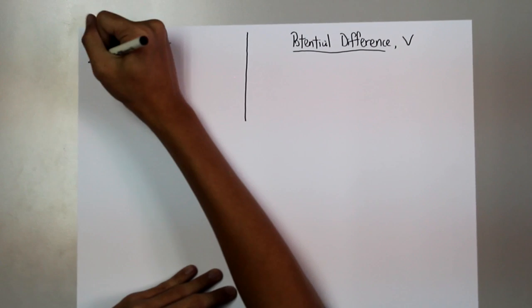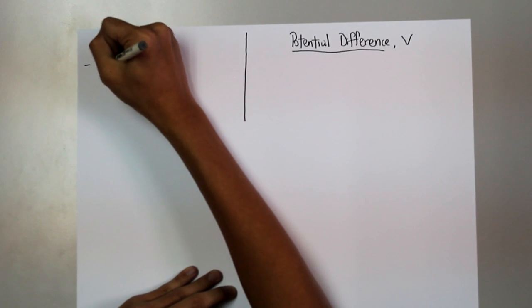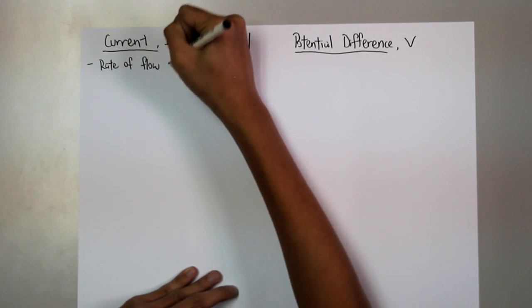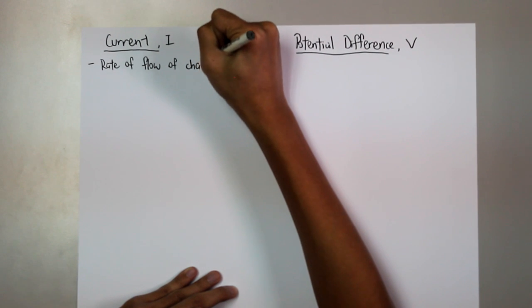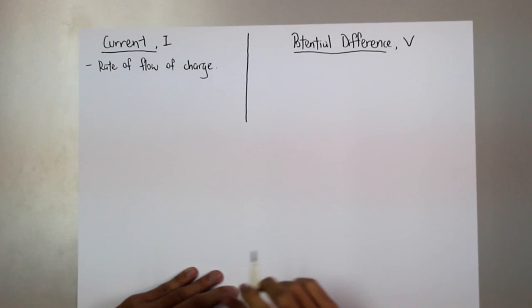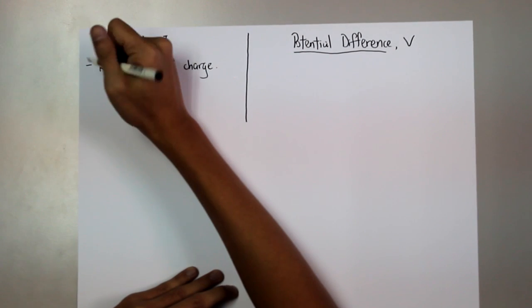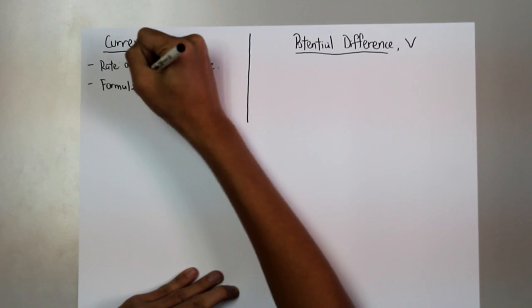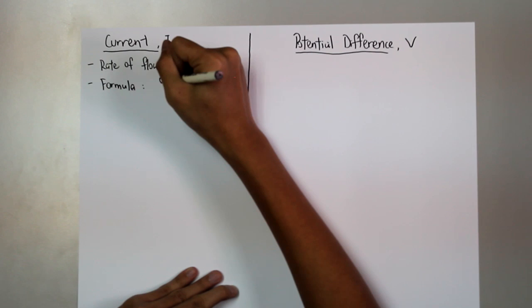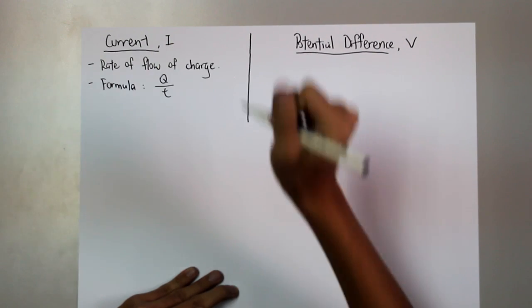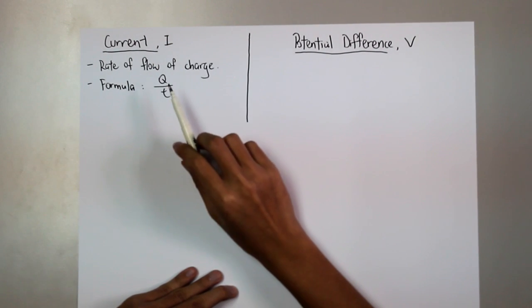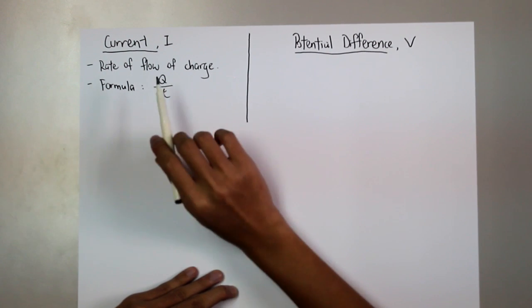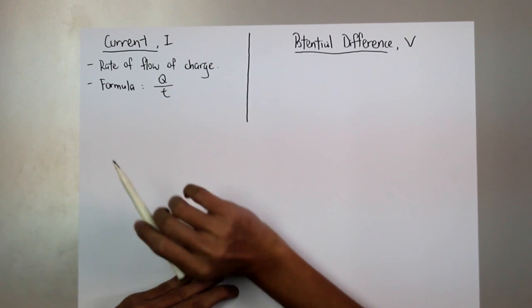The definition for current is the rate of flow of charge. From the definition, we can conclude that the formula looks something like this, Q over T. Q is the quantity of charge, whereas T represents the time. That's why you say it is the rate of flow of charge.